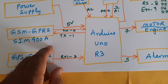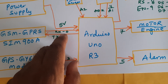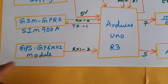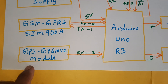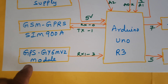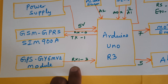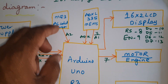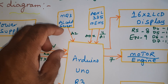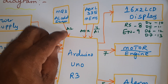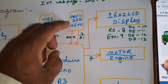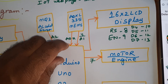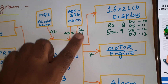The GPS module — GPS GY6M V2 — is connected to the RX3 external serial input. The MQ3 alcohol sensor is connected to pin A2. The ADXL335 accelerometer sensor is connected to A0 and A1 for the X coordinate and Y coordinate.